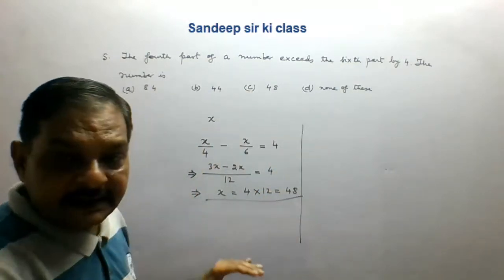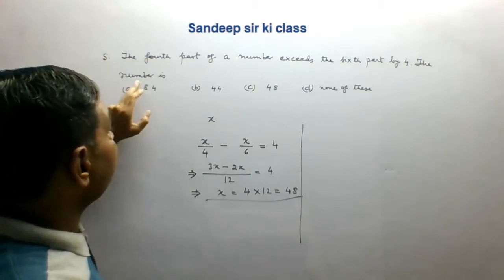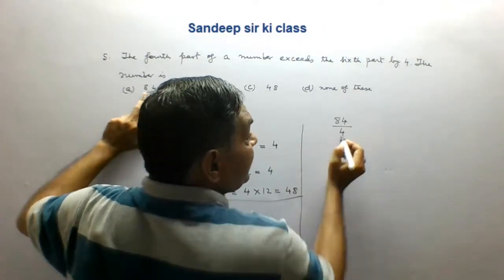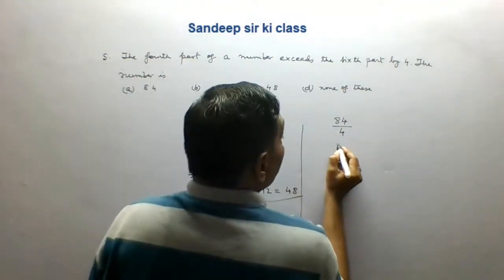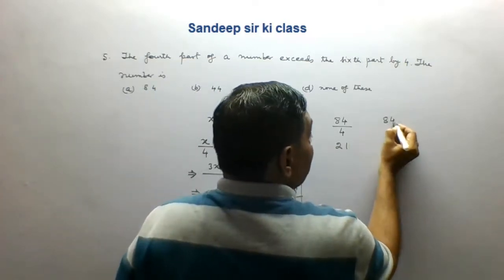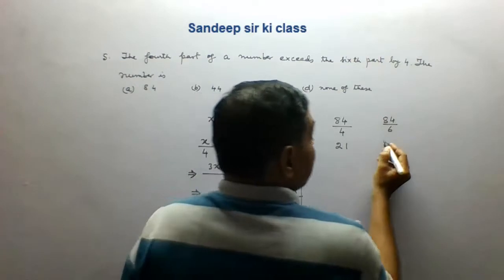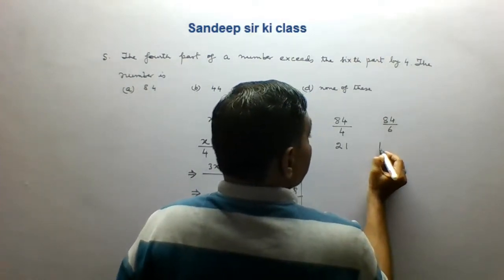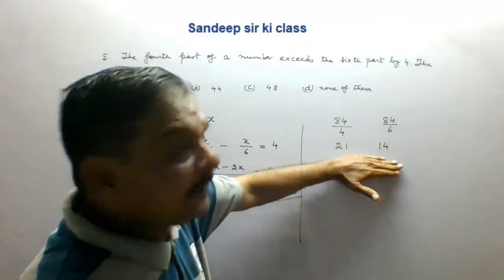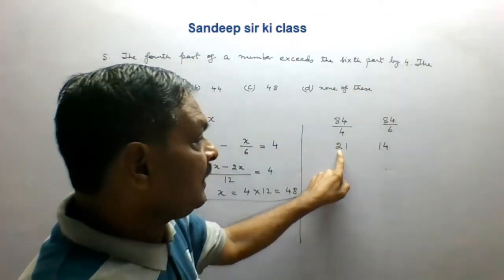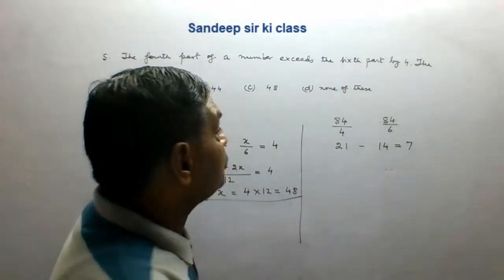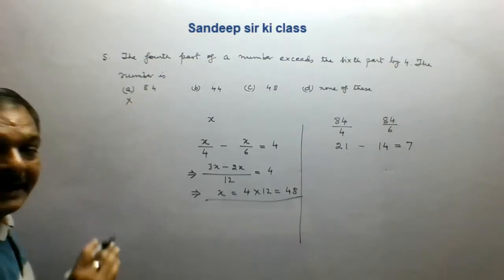Now if we see this question from the options: the first option is 84. So 84 divided by 4 — the fourth part — is 21. The sixth part, 84 divided by 6, is 14. The difference is 21 minus 14 which is 7, not 4. So option A is not the correct option.